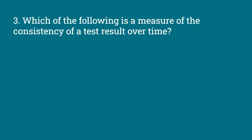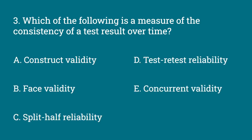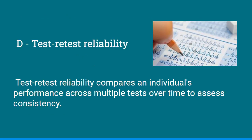Which of the following is a measure of the consistency of a test result over time? The answer choices include Construct Validity, Face Validity, Split-Half Reliability, Test-Retest Reliability, and Concurrent Validity. This would be D, Test-Retest Reliability. Test-Retest Reliability compares an individual's performance across multiple tests over time to assess consistency.